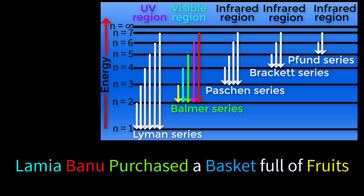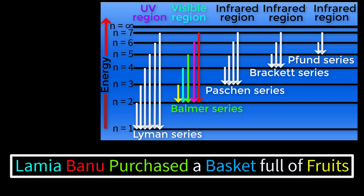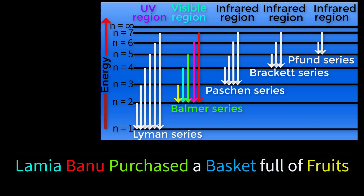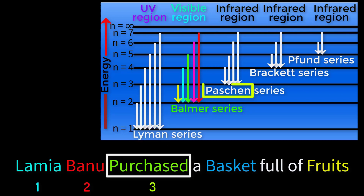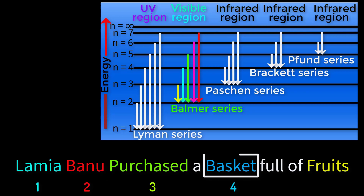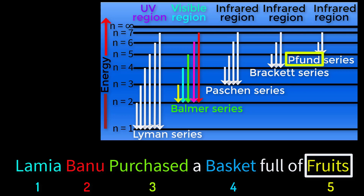Focus on this tricky sentence: 'Lamia Banu purchased a basket full of fruits.' In order, Lamia is for Lyman, Banu is for Balmer, Purchase is for Paschen, Basket is for Brackett, and Fruits is for Pfund.